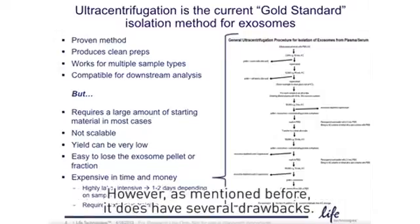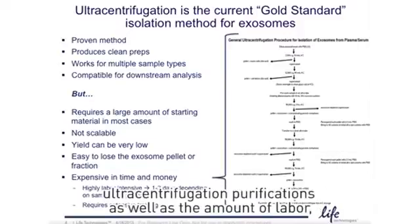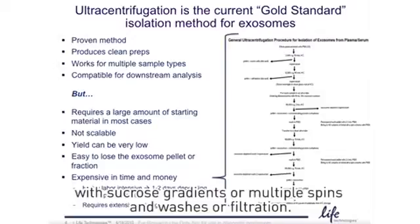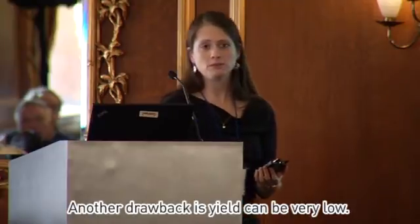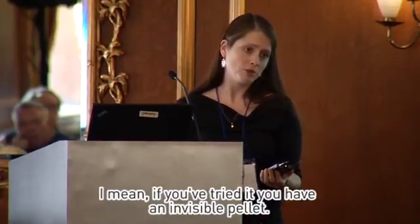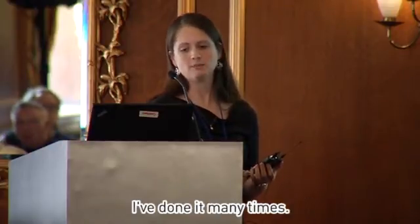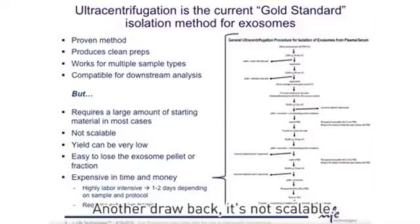However, it does have several drawbacks, one of which being the high amount of time it takes to complete these ultracentrifugation purifications, as well as the amount of labor — especially with more sophisticated protocols such as sucrose gradients, multiple spins and washes, or filtration. Another drawback is yield can be very low. Many of you have tried it — you have an invisible pellet and it's very easy to lose that pellet. Yield can be low.